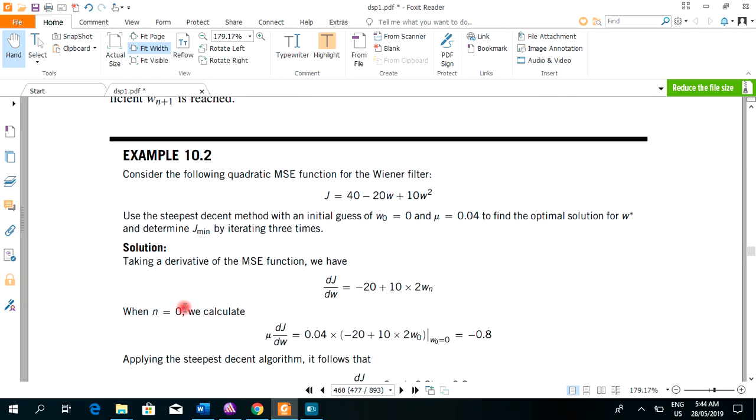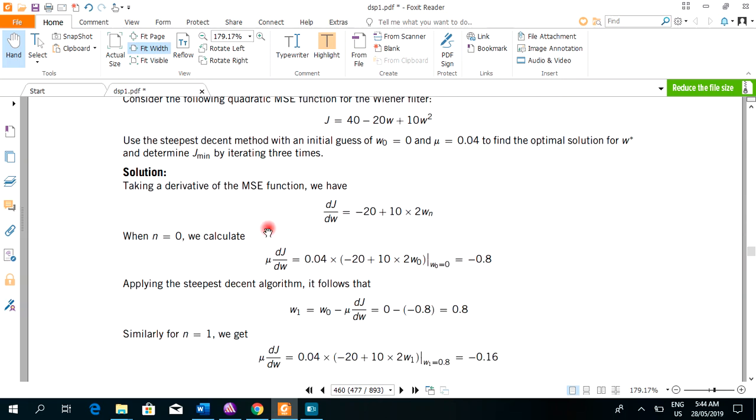Consider the following quadratic mean squared equation function for Wiener filter which is J is equal to 40 minus 20W plus 10W square. Use steepest method with the initial guess. Initial guess is given. Mu is given. We will have to find the W and J minimum.